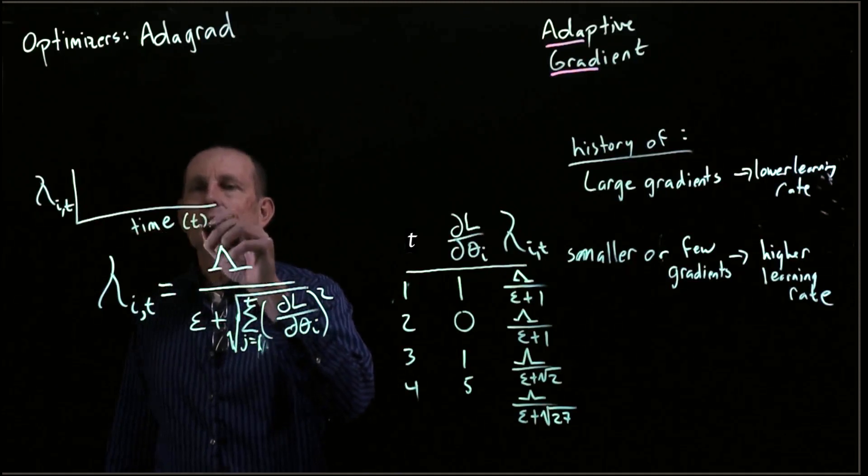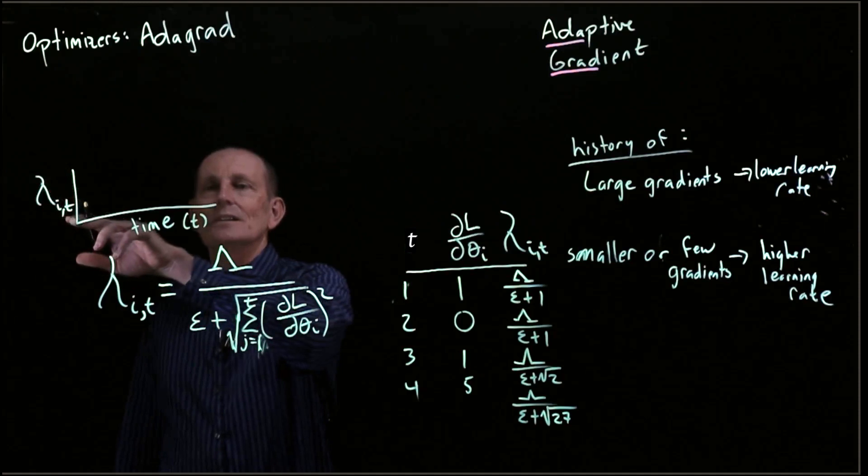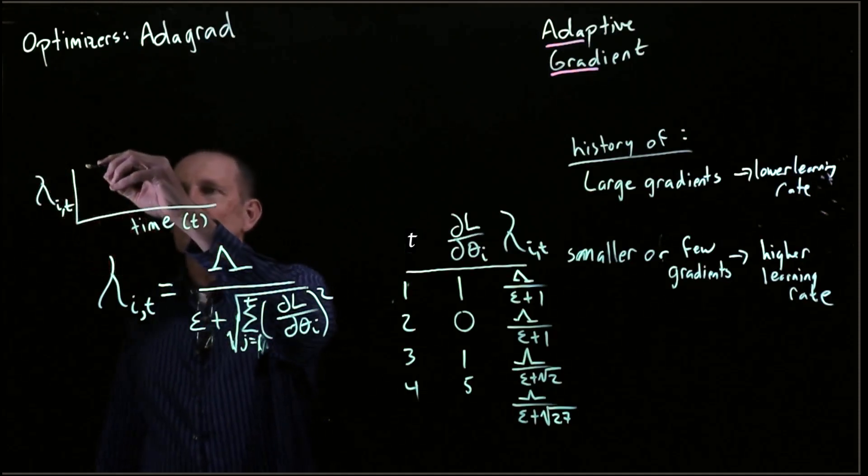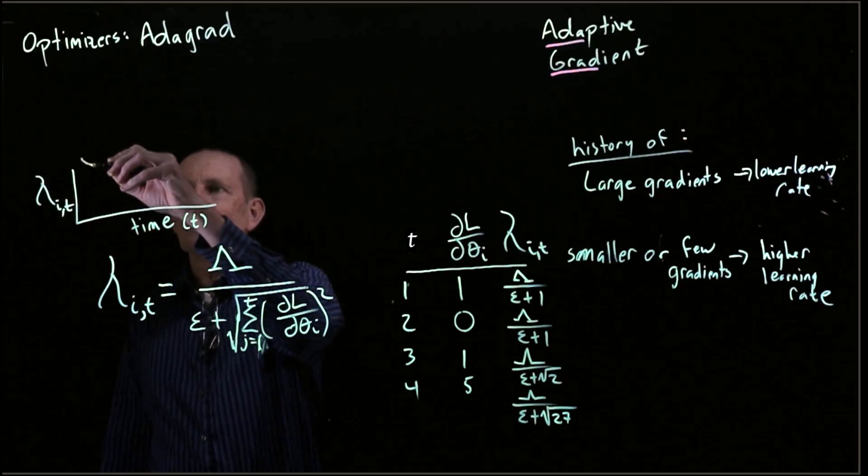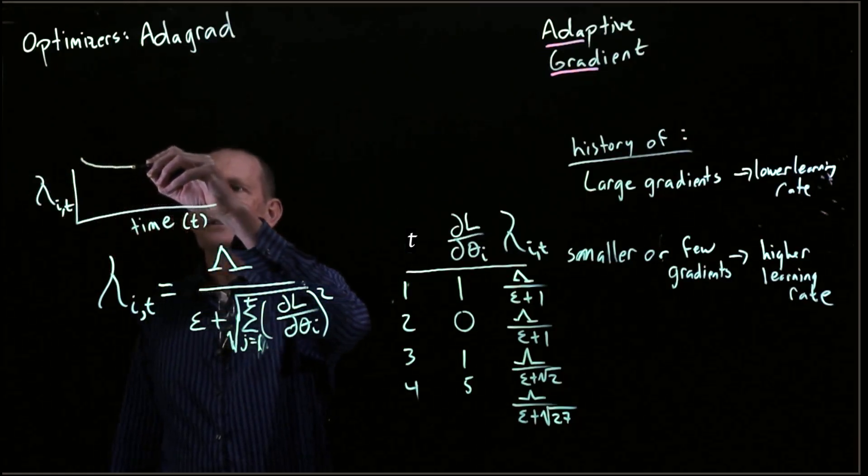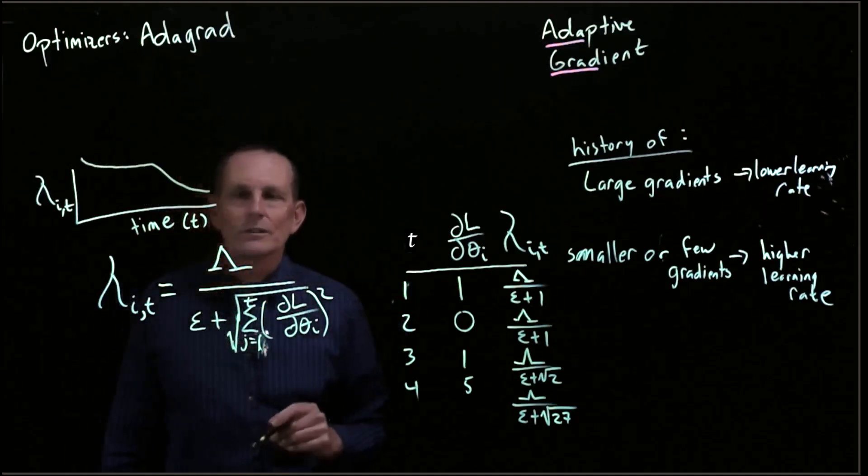So if we look at time t here and look at some particular lambda sub i, what happens is the learning rate starts high and can never increase. So it can stay constant and it can go down, but it's always decreasing over time.